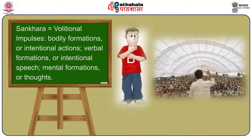The second factor is Sankhar, or volitional impulses. These include bodily formations or intentional actions, verbal formations or intentional speech, and mental formations or thoughts. Volitional impulses constitute thinking and intending in accordance with those beliefs, and planning actions accordingly — some good, some bad, and some neutral. Intentionally done actions are grouped into wholesome, unwholesome, and neutral. Ignorance gives rise to Sankhar.